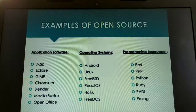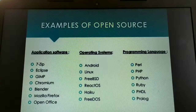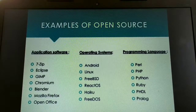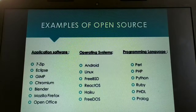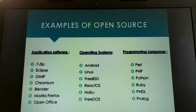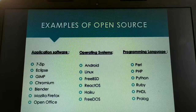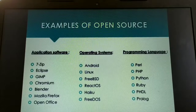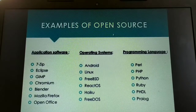Now let me make certain differences between open source software and free software. Open source software refers to software whose source code is easily available to the customer. It can be modified and redistributed without any limitations or permission. This open source software may come free of cost or with payment of nominal charges to the developers.